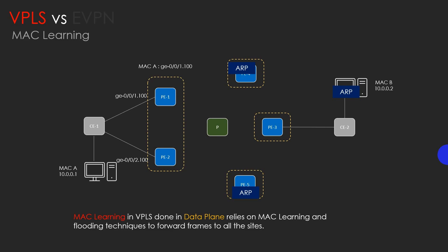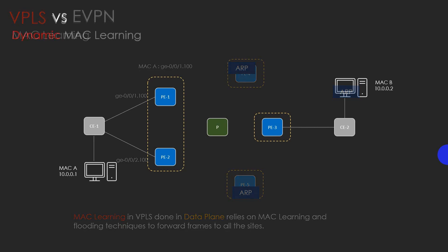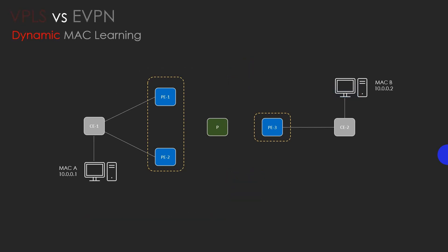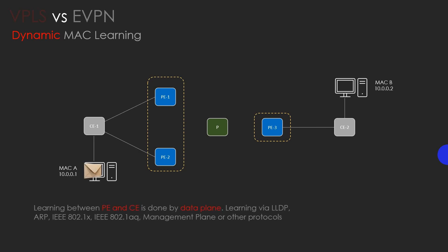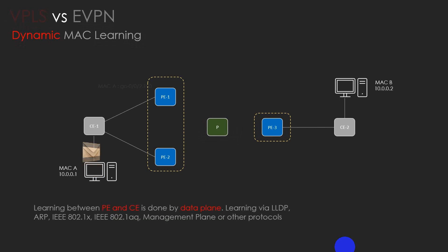The MAC address flooding can lead to inefficient bandwidth utilization and potentially impact network performance, especially in scenarios with a large number of flooded frames. Whereas in eVPN, MAC learning between PEs occurs not in the data plane as in traditional bridging in VPLS. In eVPN, the MAC learning process occurs in the control plane, which adds great control over MAC learning — such as restriction on who will learn, what will learn, and also the ability to apply policies.